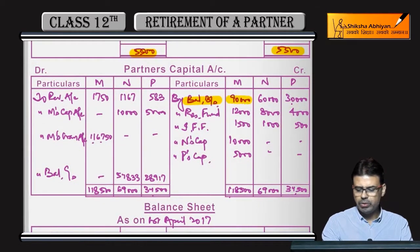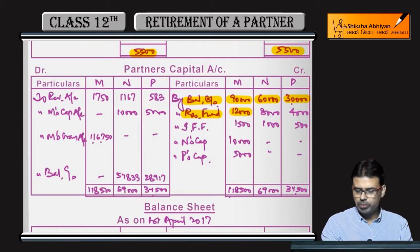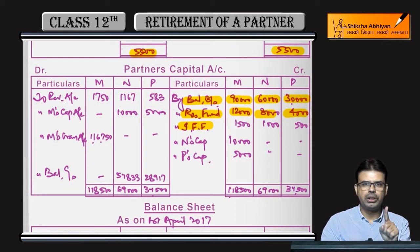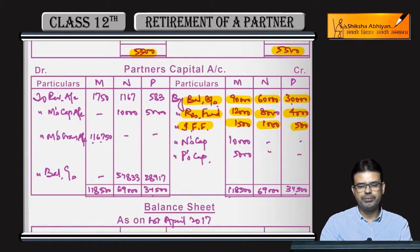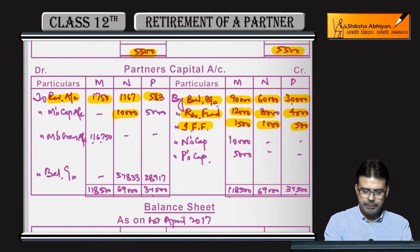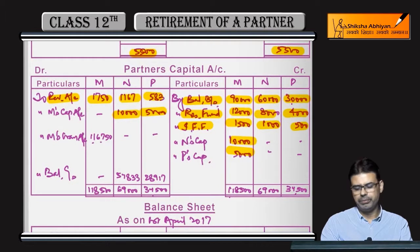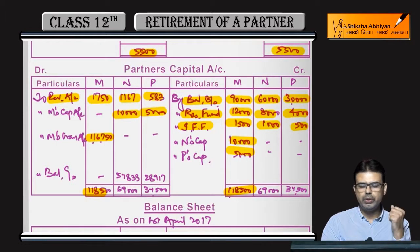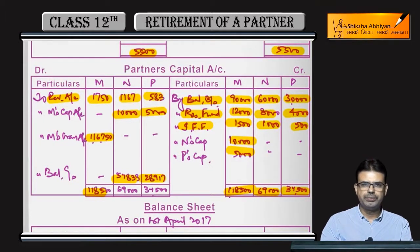Balance brought down — write partners' capital. Reserve fund of 24,000 distributed among old partners in old ratio. Investment Fluctuation Fund: after charging the loss of 1,600, balance remaining is 3,000, distributed in 3:2:1 ratio. Revaluation loss charged. Goodwill: N debit, P debit to M — credit M's capital 15,000. M's total capital calculated and transferred to M's loan account since no amount is given in the question. N and P's simple balance carried down.